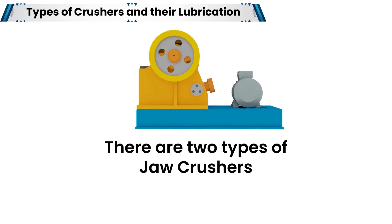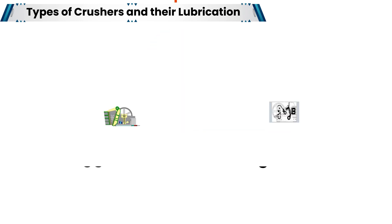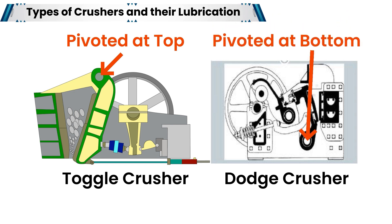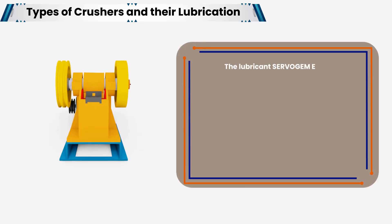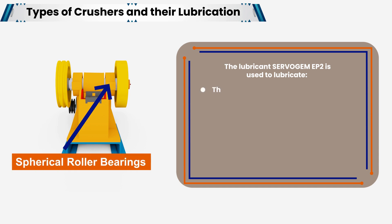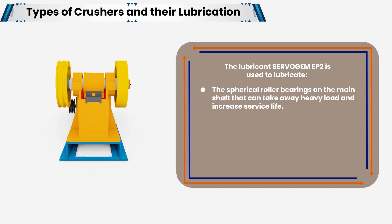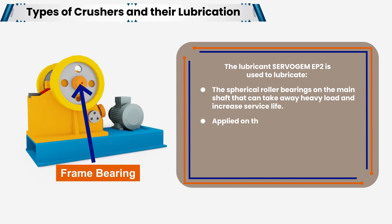There are two types of jaw crushers based on where the movable jaw is pivoted: pivoted at top is the toggle crusher and pivoted at bottom is the dodge crusher. The lubricant Servo GEM EP2 is used to lubricate the spherical roller bearings on the main shaft, applied on the frame bearings connecting the flywheel to the main shaft, and toggle bearings joining the toggle plate and seat.